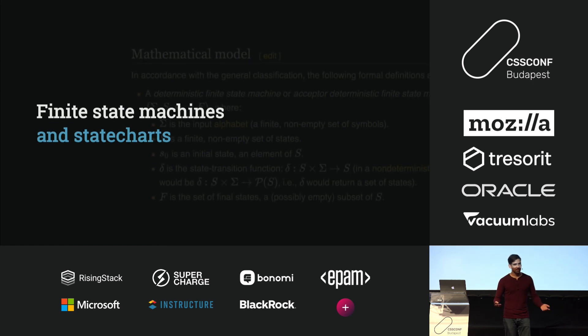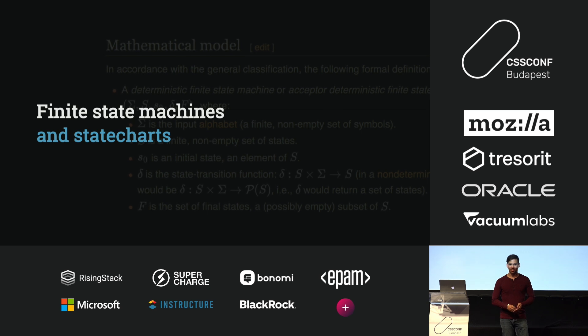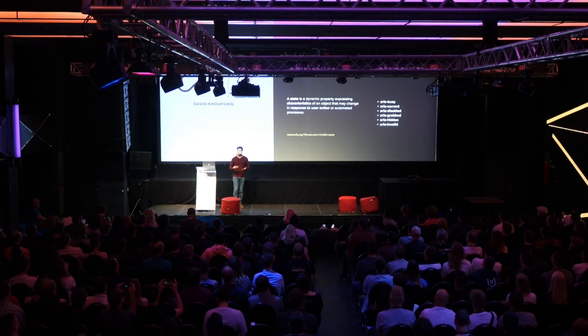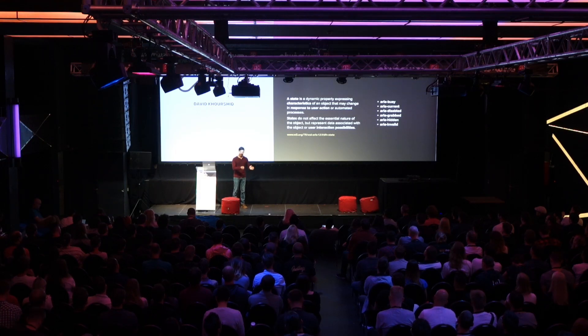What I realized was common between all these tools is that user flows are transitions between user interface states, and those transitions can be caused by user events or external events such as a timer or an API request. One of my favorite definitions of state is in the ARIA guidelines on w3.org, where a state is a dynamic property that expresses the characteristics of an object at a certain point in time — in response to a user action, automated processes, or external events. This is distinct from properties like an href attribute or a button variant that don't change.